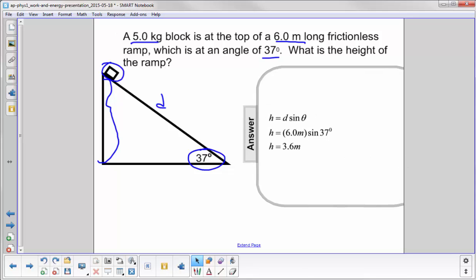So we use a little trigonometry here. We know, for example, that sine theta is opposite over hypotenuse. So sine theta is h over d. We just multiply through by d and we have h is d sine theta.